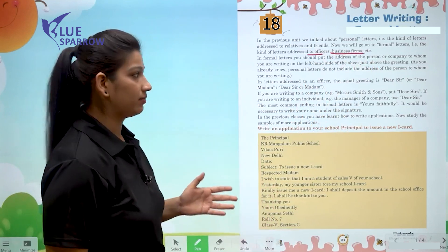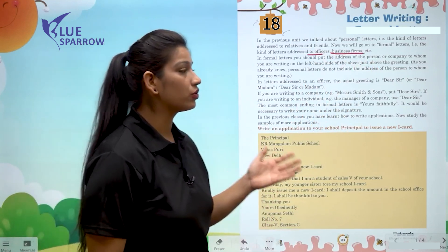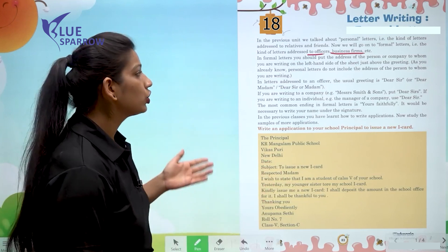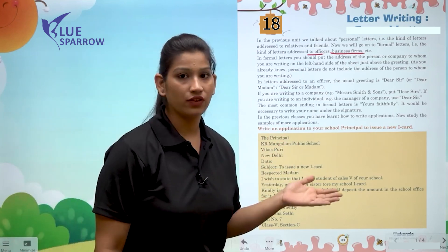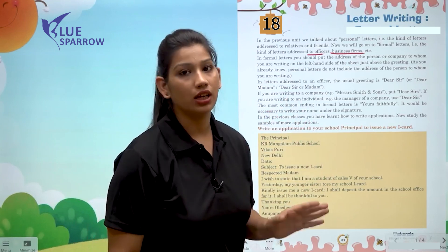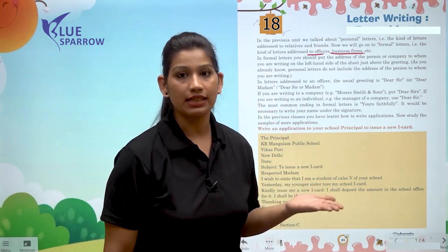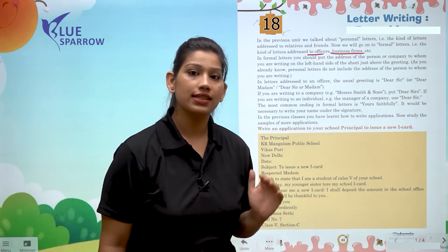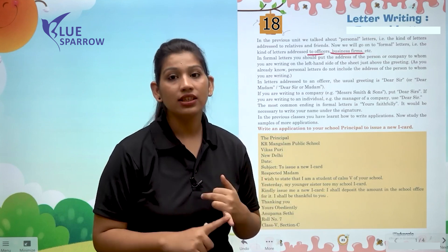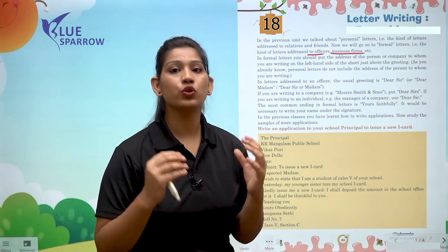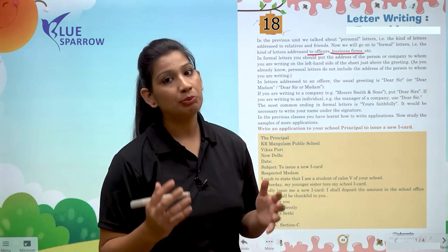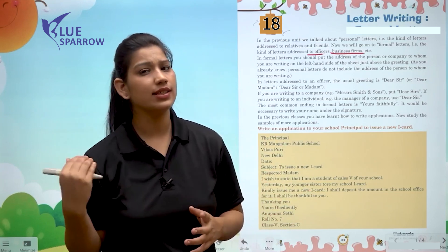In a formal context, you should put the address of the person or the company to whom you are writing on the left side of the sheet. The format is completely different compared to the informal letter. In this case, you use formal language, and the length is decided — you have to complete your information in a few words.